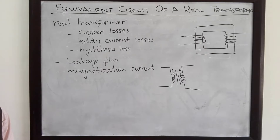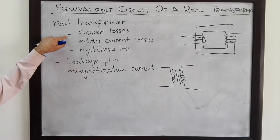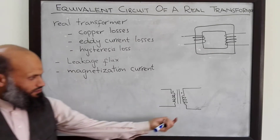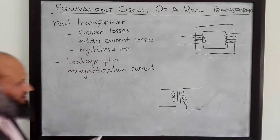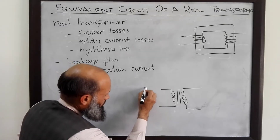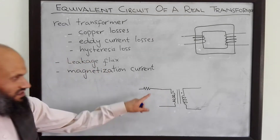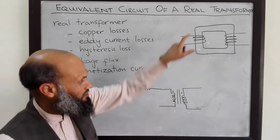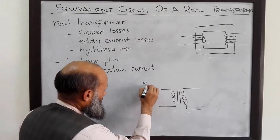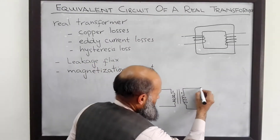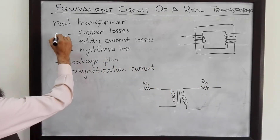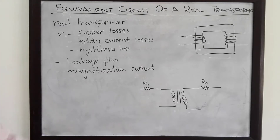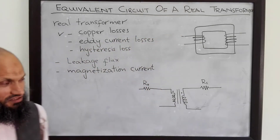We start with copper losses, which is the simplest effect to incorporate. Here is an ideal transformer. We can incorporate copper losses by simply appending a resistance — Rp, the resistance of the primary winding — and similarly Rs, the resistance of the secondary winding. This effect is very easy to incorporate; the resistances of the windings can be represented in series.